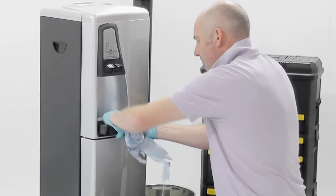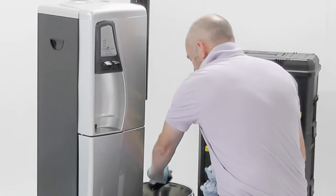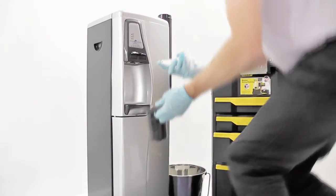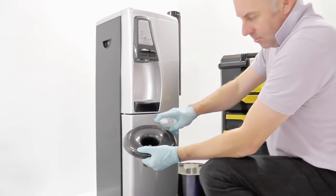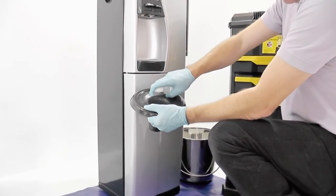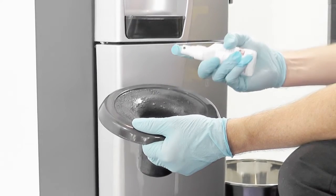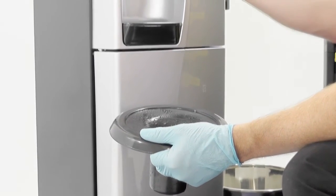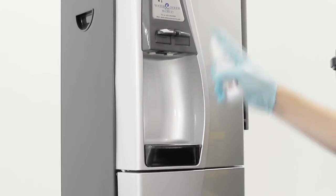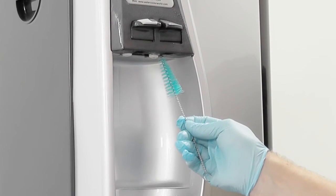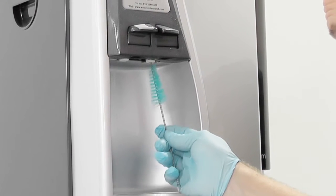Remove the drip tray and empty any contents. So while the contact time of five minutes is working, we spray with 3% peroxide the water guard and the taps, and brush the recessed taps.